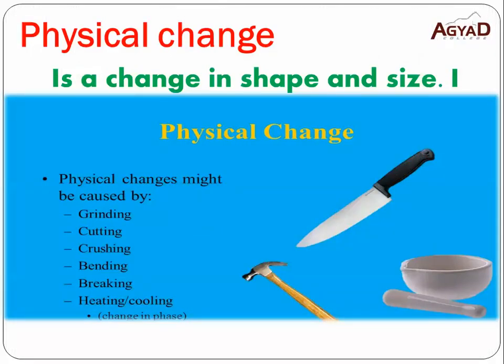Physical change: a physical change is a change in shape and size only. For example, when you have a piece of ice and you leave it in the sun, the ice melts and changes into water. You can get the water and put it in the freezer again and it will change back into ice. So the water itself didn't change.